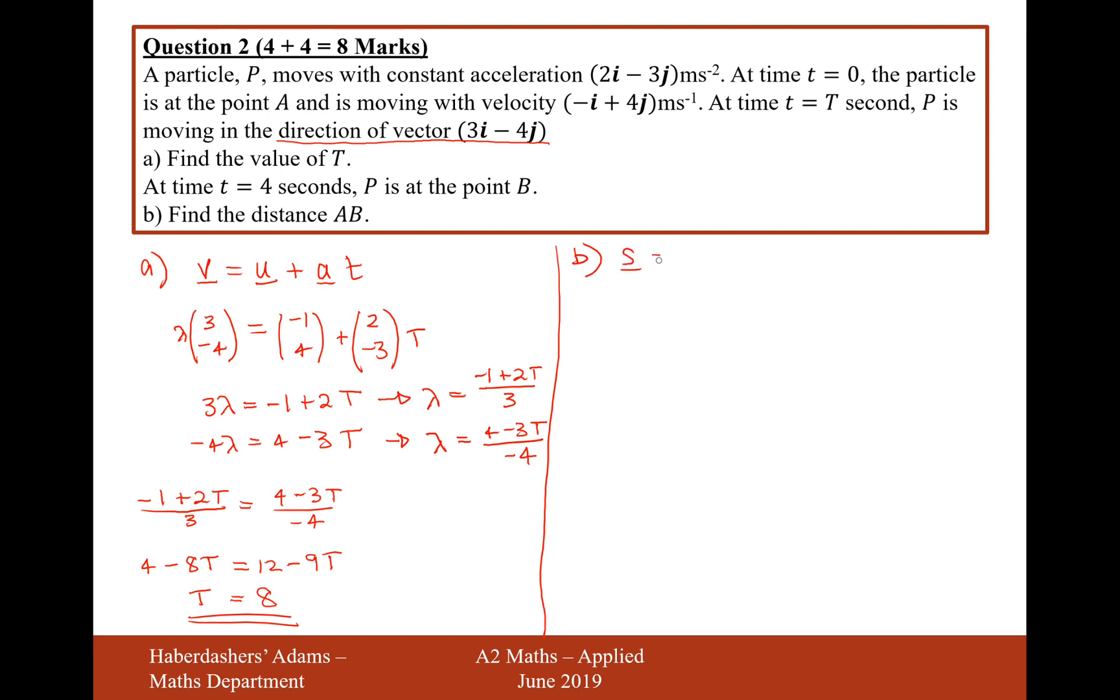So this is going to be s equals, the initial velocity is going to be -1, 4. That's going to be multiplied by 4 seconds. Add a half of 2, -3, and that's going to be multiplied by 16. So let's work this out. It's going to be s equals -4, 16 if I multiply all of that stuff together. And then, let's multiply all of this stuff together now.